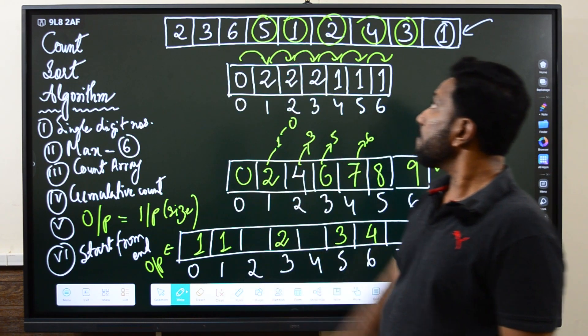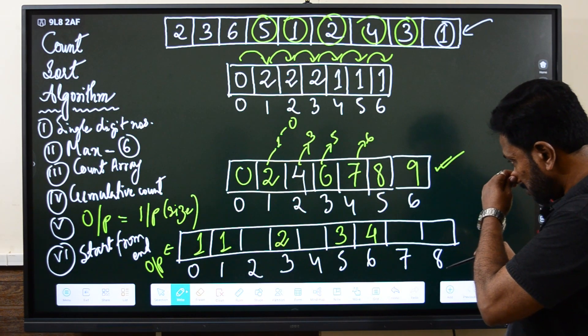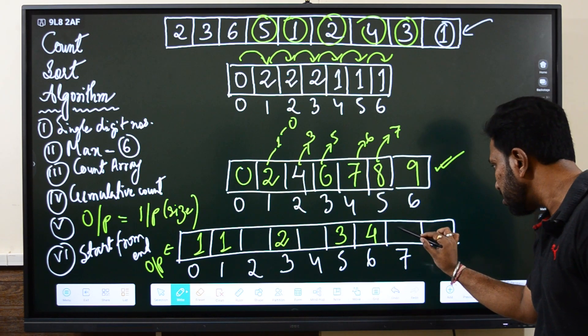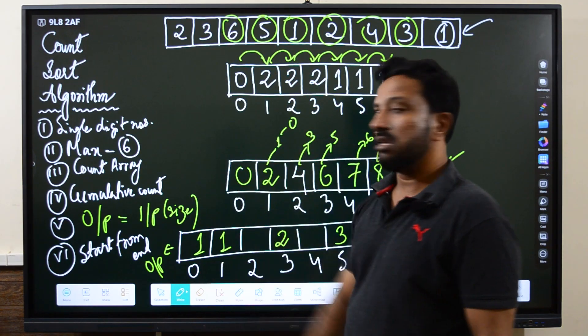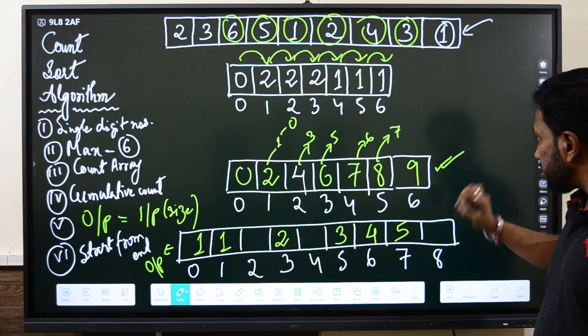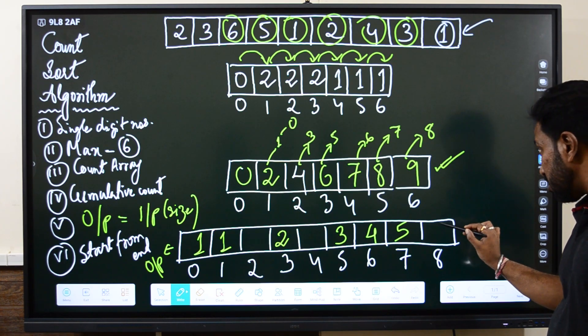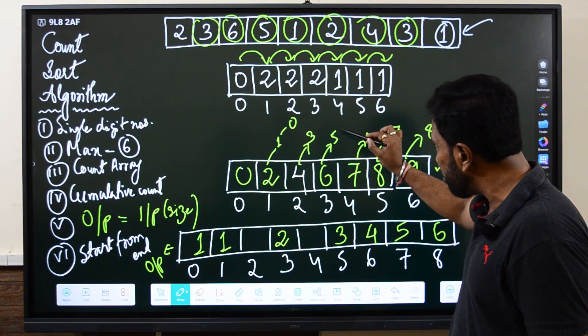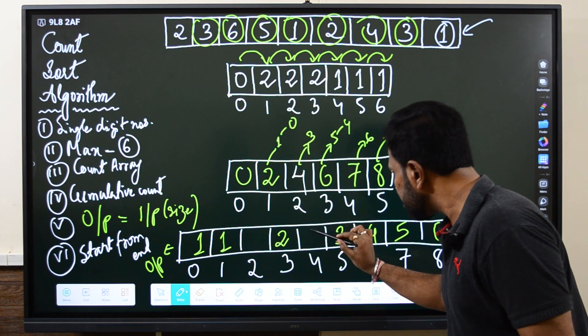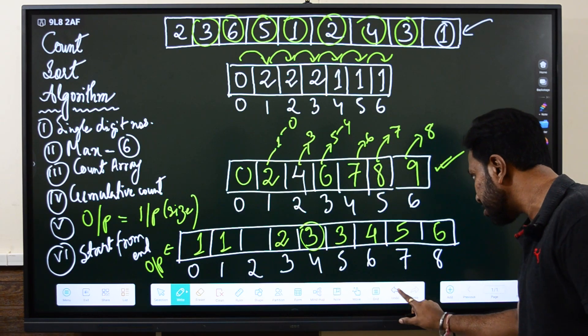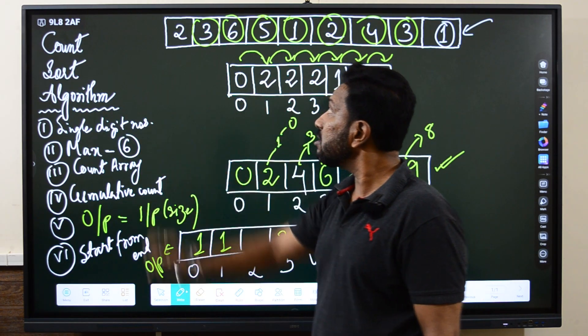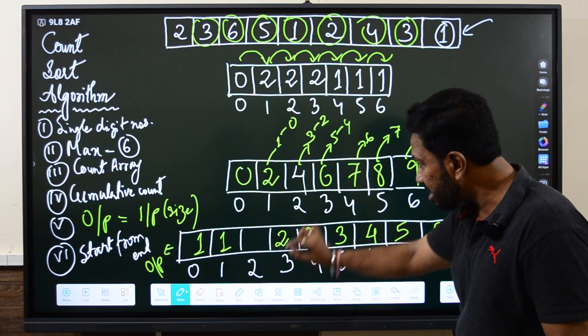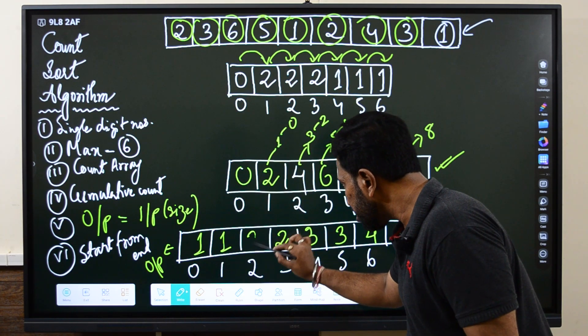Then comes five. Cumulative count of five is eight. So eight minus one becomes seven. At index number seven you will store five here. Then we have six. The cumulative count of six is nine. So nine minus one becomes eight. At index number eight in the output array you will store six. Then we have three. The cumulative count of three is five. So five minus one becomes four. At index number four you will store three. And finally we are left with two. Obviously there is only one position left. If you want to verify, the count of two is three. Three minus one becomes two, so index number two will be storing this two.